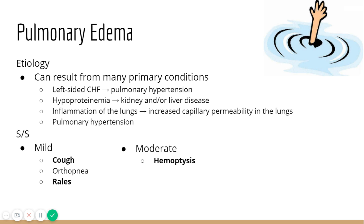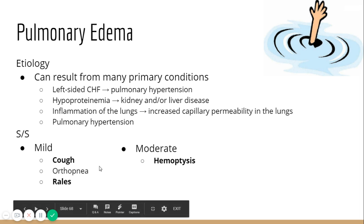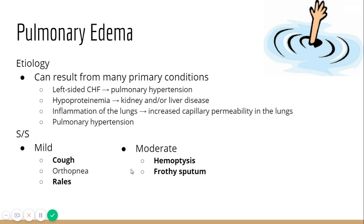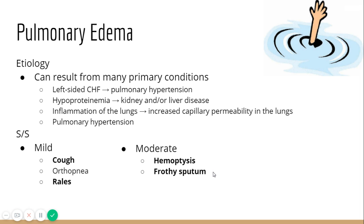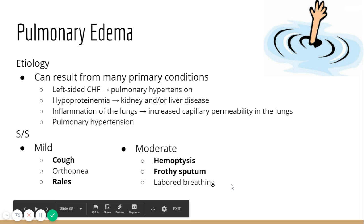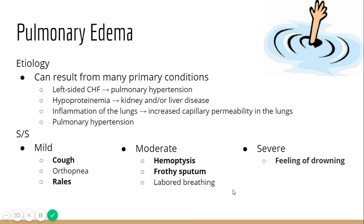With moderate pulmonary edema, we have hemoptysis — coughing up blood — from the capillaries rupturing under the pressure occurring within the lungs. The pulmonary hypertension pressures become too great and capillaries start bursting. Because of surfactant in the lungs mixing with plasma fluid, coughed-up material becomes frothy and bubbly — almost like the foaming from the mouth seen with rabies.